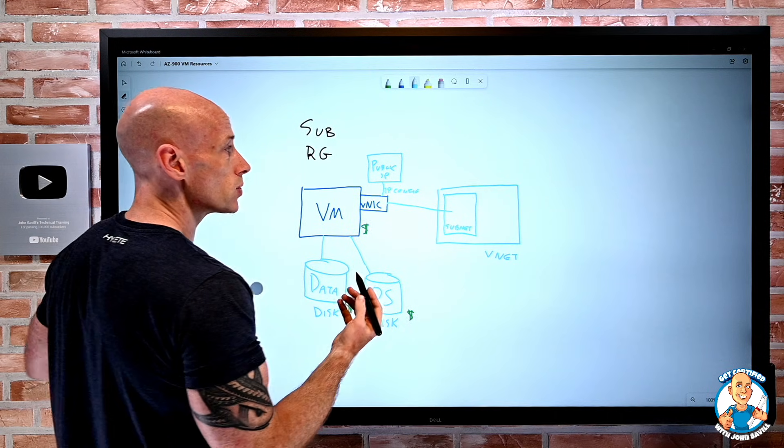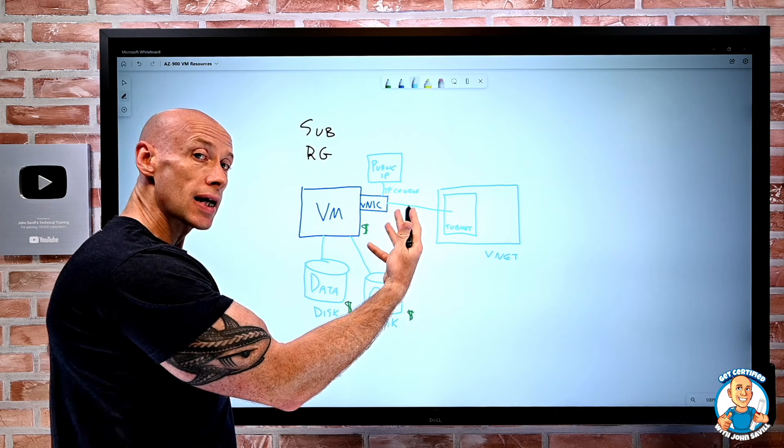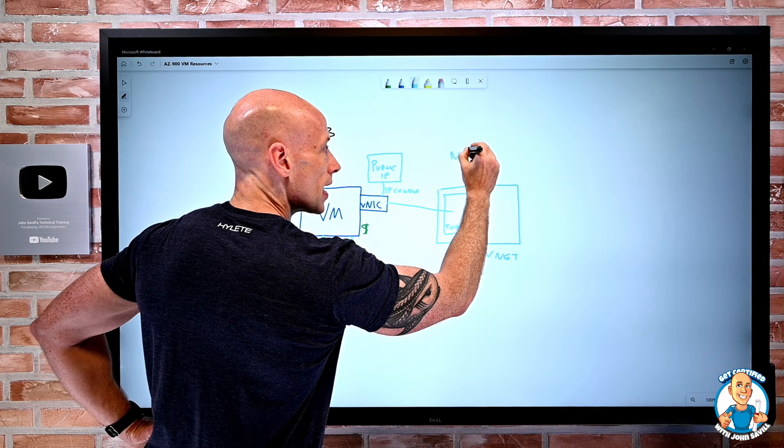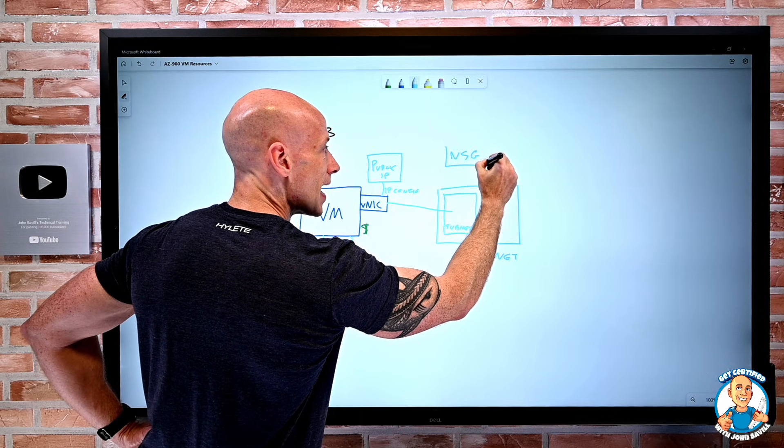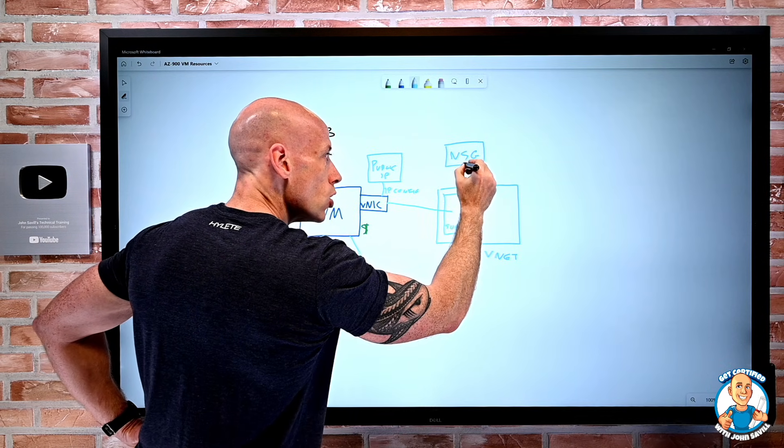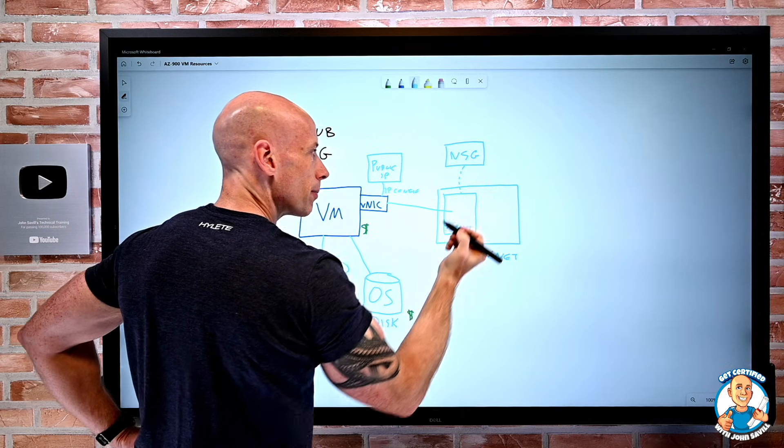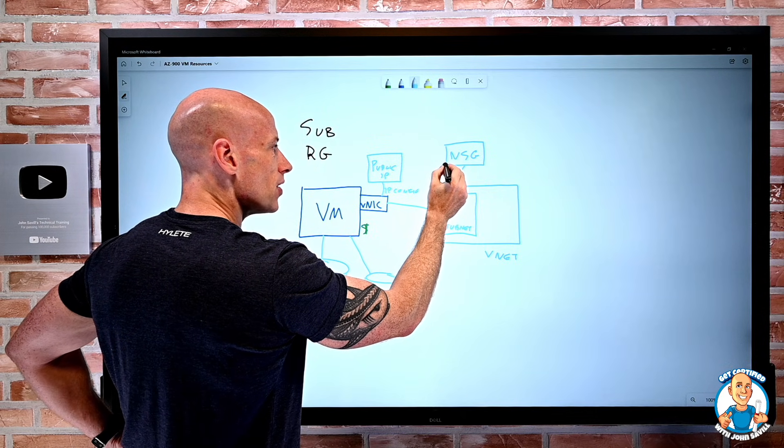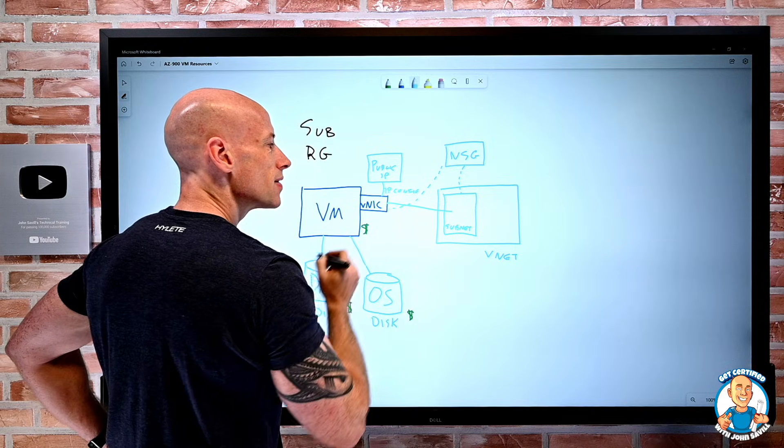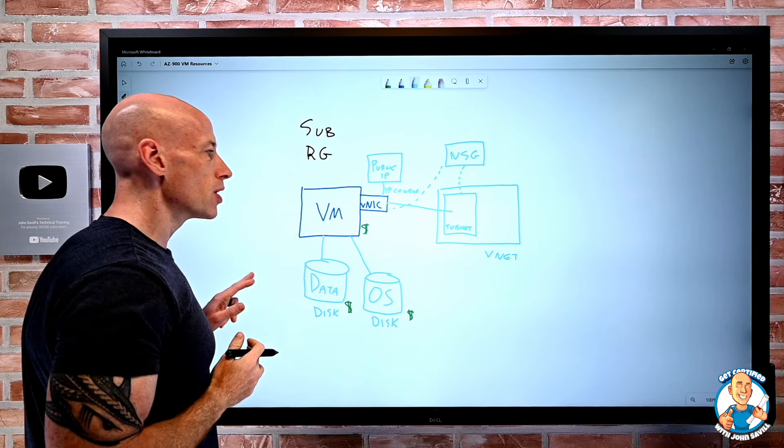Additionally, in terms of resources, what if I want to lock down communications? I may create a network security group, again, its own resource, which I then attach to enforce at the subnet level or maybe even the NIC level. But we prefer to do them at the subnet.